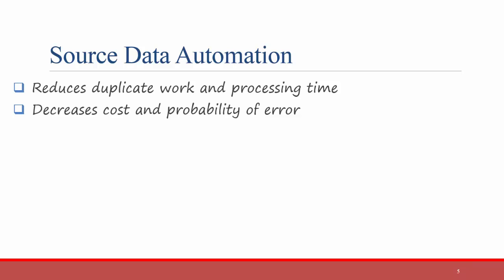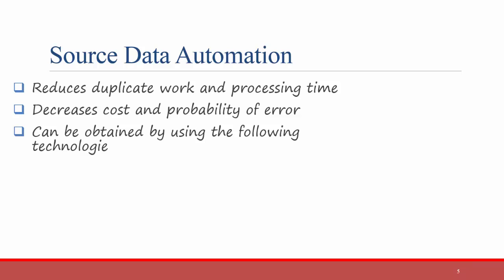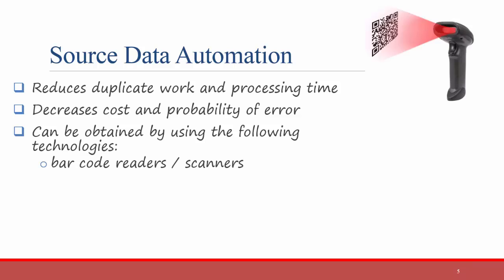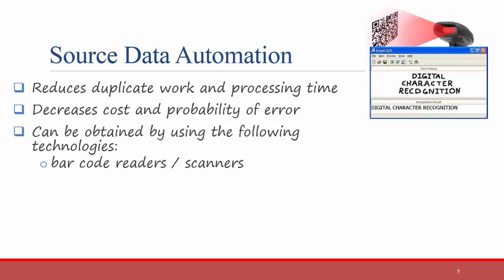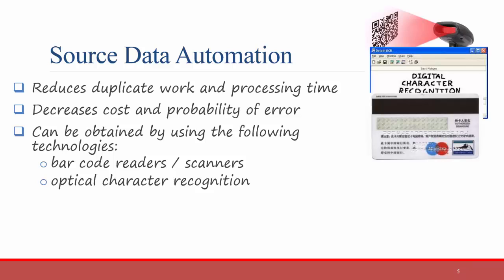Source data automation can be obtained by using the following technologies: barcode readers and scanners, optical character recognition, and magnetic stripe readers — for example, those you see on credit cards. It's easier to get credit card information just by swiping the magnetic reader rather than having the user type in their long credit card number every time.